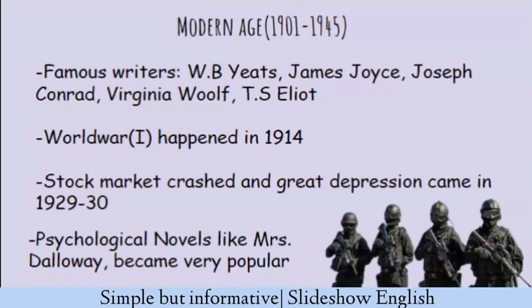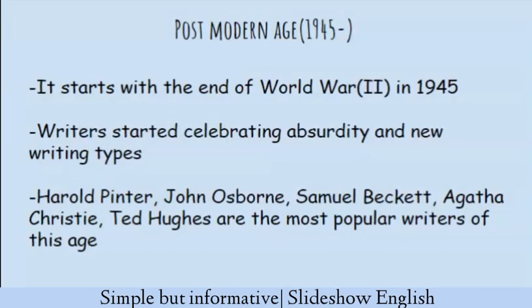In 1901 we have the Modern Age of English literature. W.B. Yeats, James Joyce, Joseph Conrad, Virginia Woolf, and T.S. Eliot wrote during this period. The First World War happened in 1914 and the Great Depression came in 1929 when the stock market crashed. Lives became miserable and fragmented — mental stress, depression, and anxiety became common. Psychological novels and stream-of-consciousness novels, like Mrs. Dalloway by Virginia Woolf, started becoming popular.